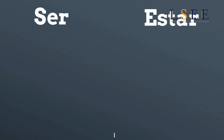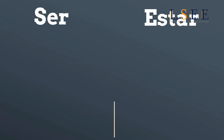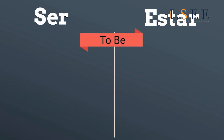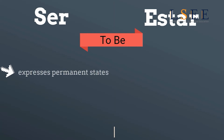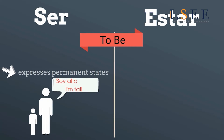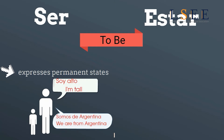Ser o estar. There are two verbs in Spanish to express 'to be': ser and estar. In general, ser expresses permanent states such as 'soy alto' (I am tall) or 'somos de Argentina' (we are from Argentina).